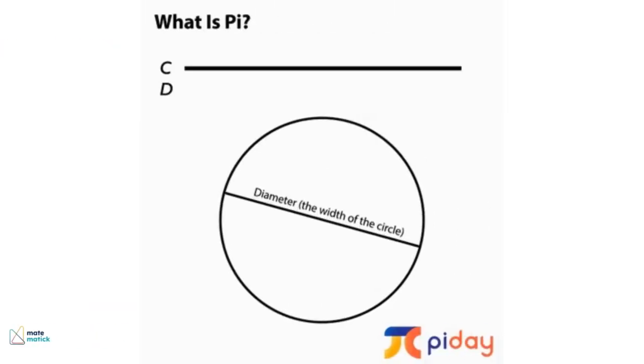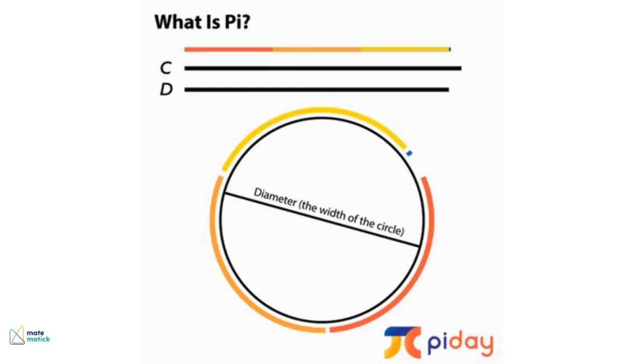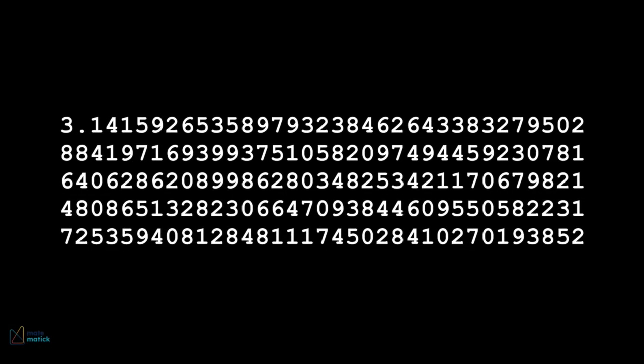Pi, as we all know, represents the ratio of a circle's circumference to its diameter. Its value, approximately 3.14159, is an irrational number, meaning it goes on forever without repeating.